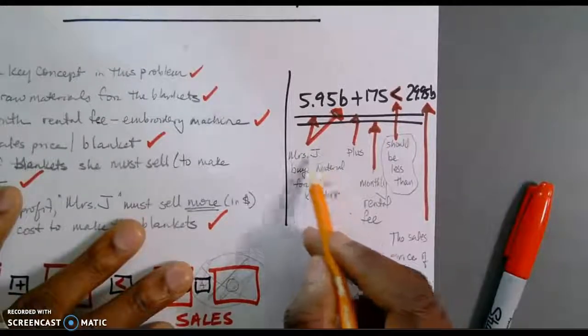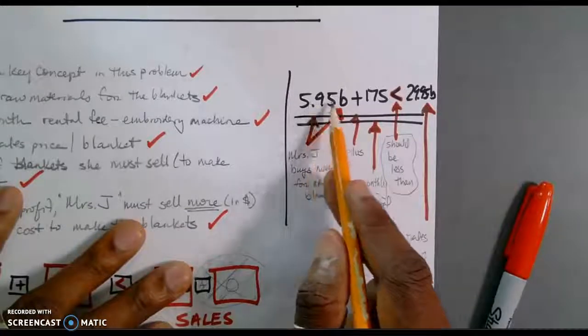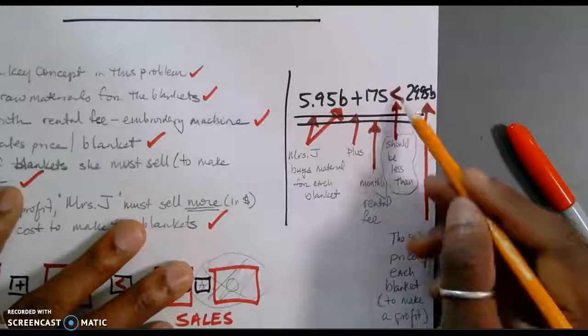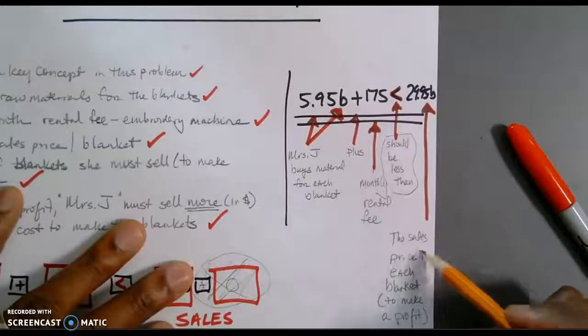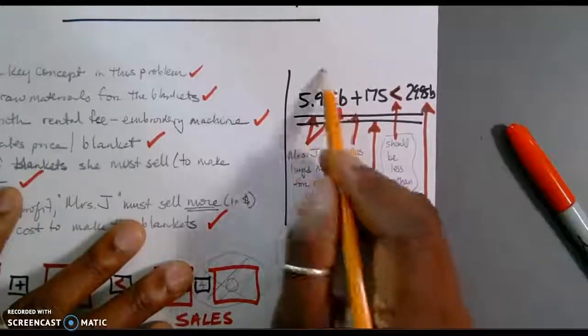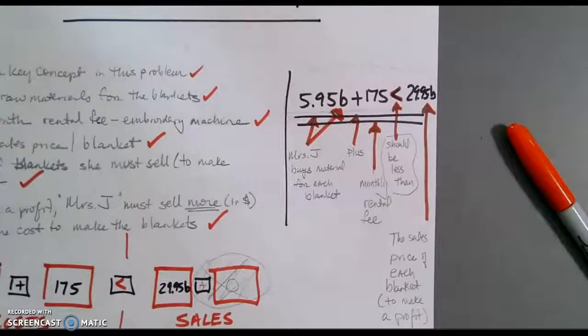Mrs. J, Mrs. Jimenez, buys material for each blanket at $5.95 per blanket, plus her monthly rental of $175 should be less than the sales price of each blanket to make a profit. This is the essence of what we're solving. Now, 8.8a just focuses primarily on writing your equation.